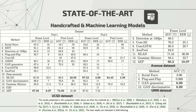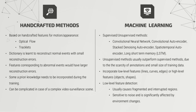These are some of the state-of-the-art methods surveyed, with results on different benchmark datasets. Some are handcrafted methods and others are machine learning methods. Even though handcrafted methods do not have the best accuracy results, they are significant to the field and still used as standard comparison methods. Handcrafted methods require the extraction of motion or appearance features such as optical flow estimation and tracklets. A dictionary is taught to reconstruct normal events with small reconstruction errors, while features corresponding to abnormal events have large reconstruction errors. The problem is it requires some prior knowledge during training, which can be complicated in complex video surveillance scenes.